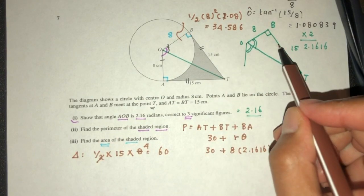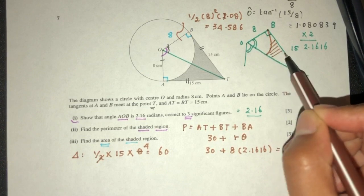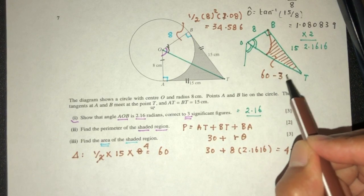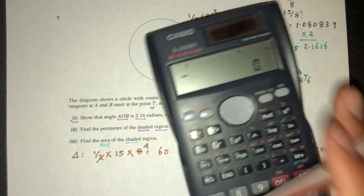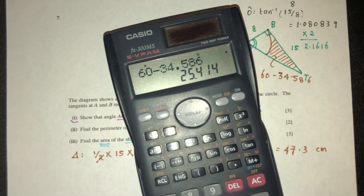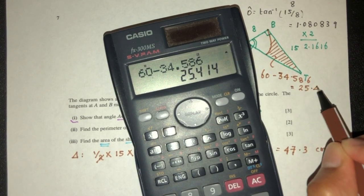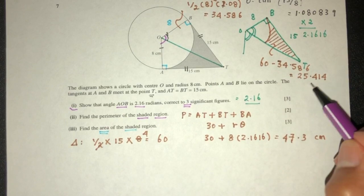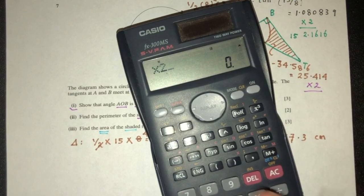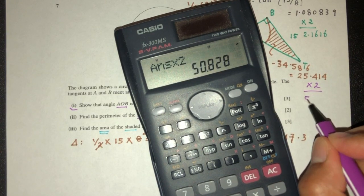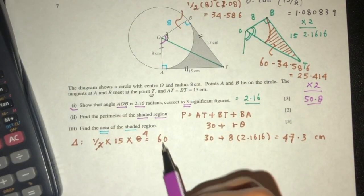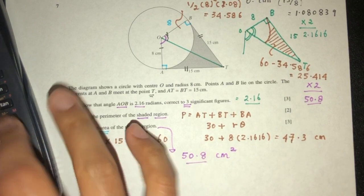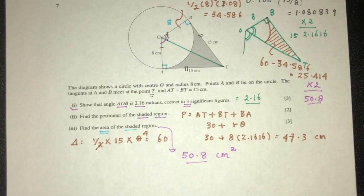So the area for just this side will be this one minus this. So 60 minus 34.586, that should be 25.414. But again, we understand that this and this are the same, so we just have to multiply by 2 to find the whole thing. That should be 50.8, correct to 3 significant figures, for the area of the shaded region. So of course you have to write centimeters squared for the area. And that will be the question in relation to circular measure.